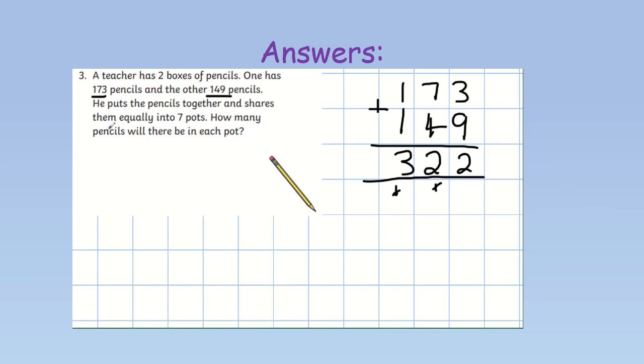Now we know how many we know that the teacher shares them into pots of 7. So, now we can do our division. 322 divided by 7. How many 7's are in 3? We can't do. How many 7's are in 32? Well, 4 7's are in 48. With a remainder of 4. How many 7's are in 42? Well done. 6 7's are in 42. So, that means there are 46 pencils in each pot. Did you get this one right? Excellent work!